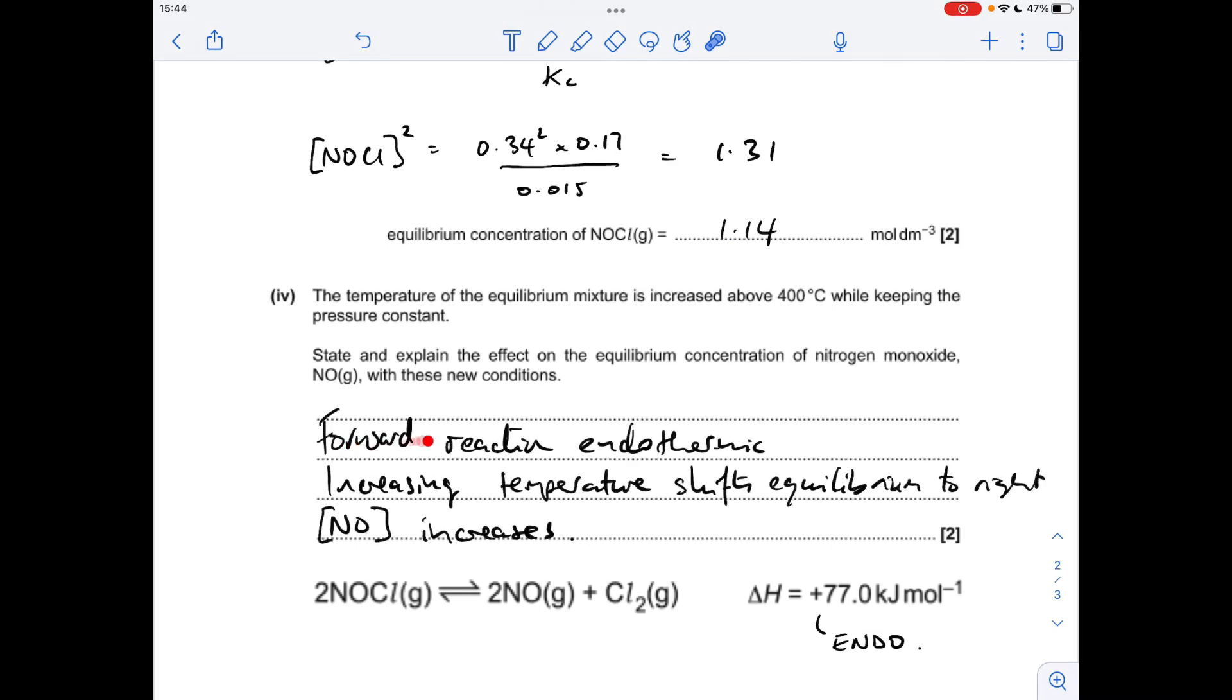So as an answer, I'm just saying the forward reaction is endothermic. Increasing the temperature shifts the equilibrium to the right. The NO concentration increases.